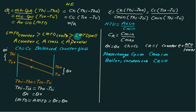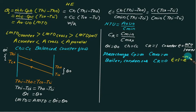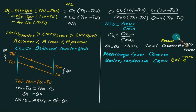This equation becomes: effectiveness = 1 - e^(-NTU). So we have two equations of NTU to use. For parallel flow, effectiveness = (1 - e^(-2×NTU)) / 2.